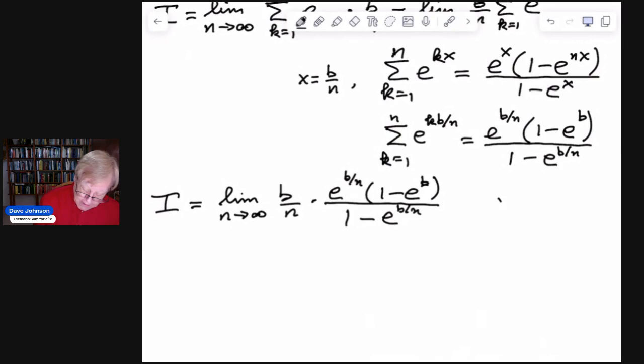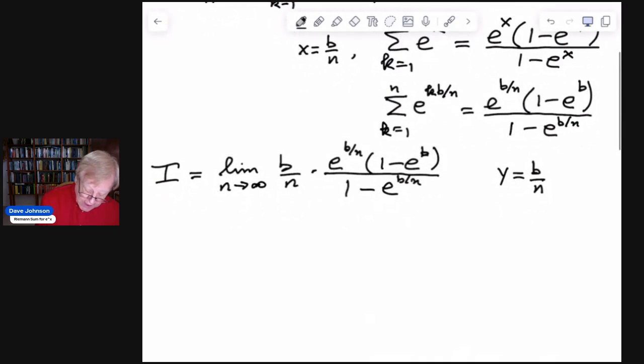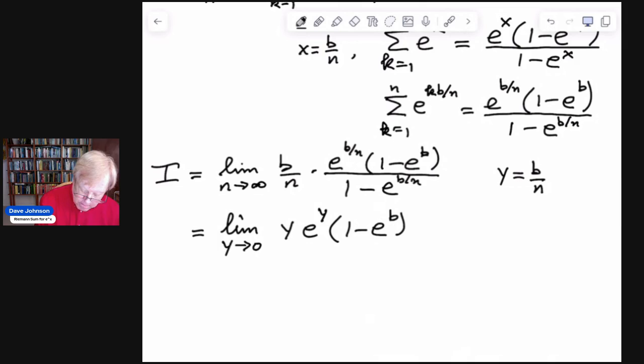So if we say, let's let y equal b over n, and then rewrite this as the limit. So if n goes to infinity, y goes to zero. So say y goes to zero of y times e to the y times 1 minus e to the b, because that doesn't change, divide by 1 minus e to the y.